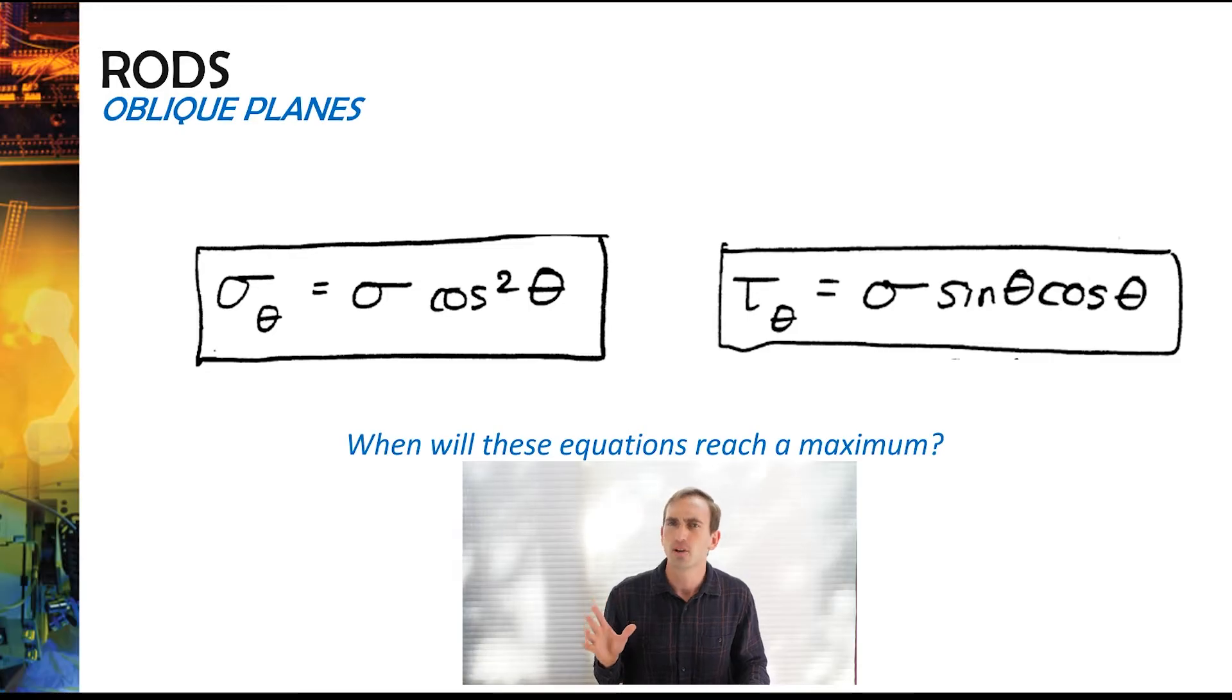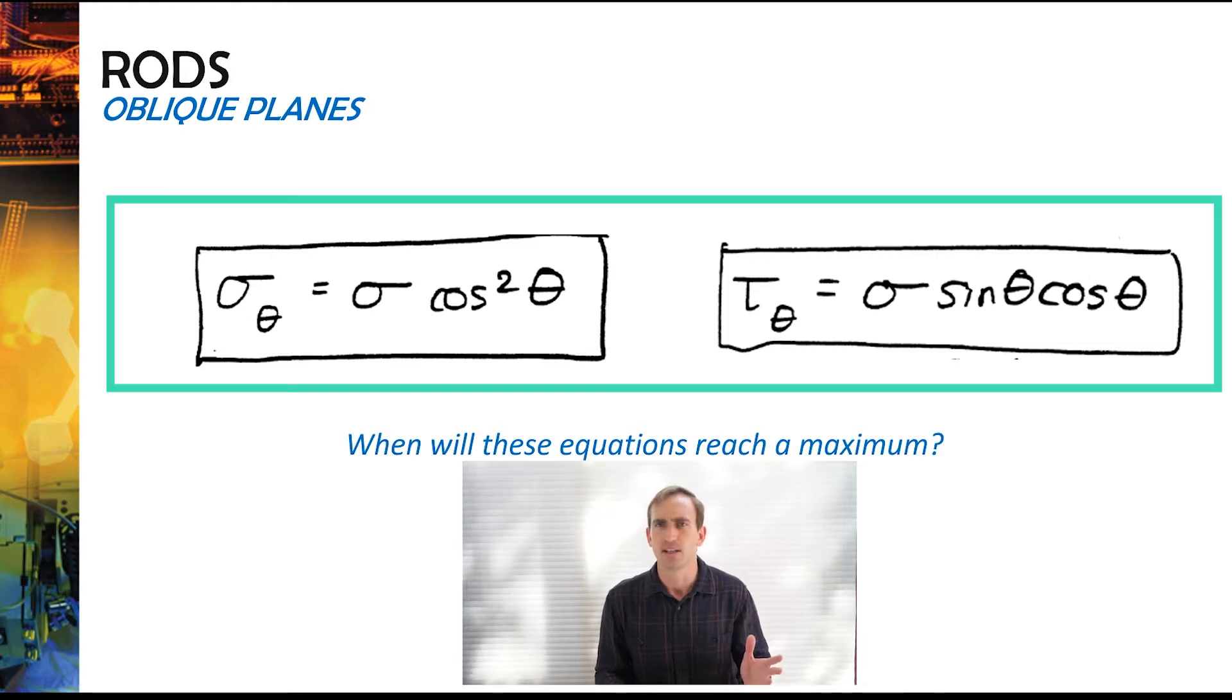One other thing we can look at is when these equations will reach their maximum stress. When would sigma theta be a maximum, and when would tau theta be a maximum? For what values of theta? Pause your video and just think about that for a second.